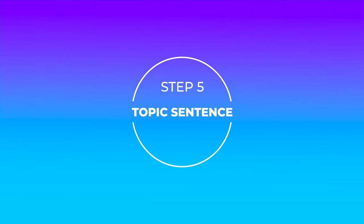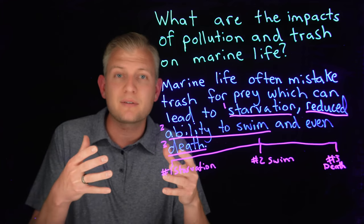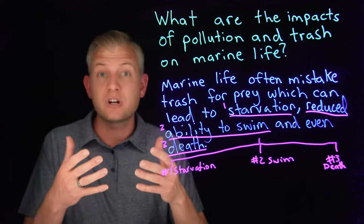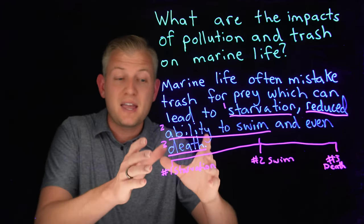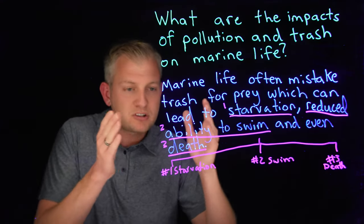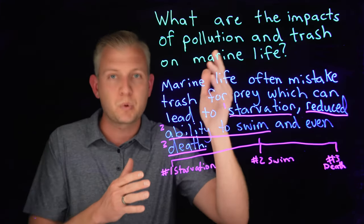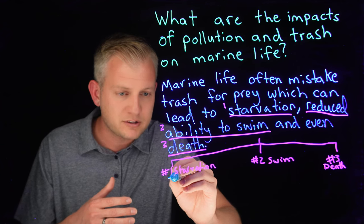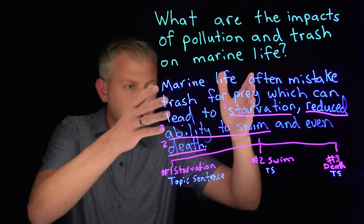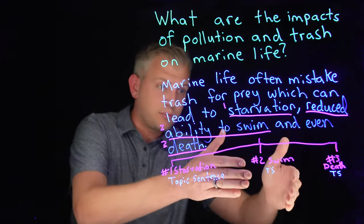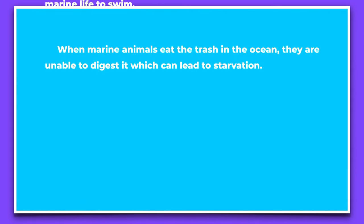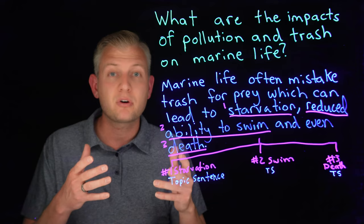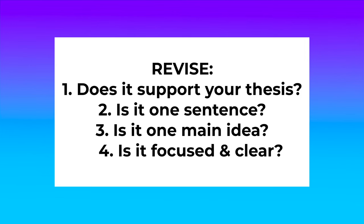Step five: write your topic sentences. I'm going to write my topic sentences — that's the one introductory sentence to each body paragraph that introduces the main topic for that paragraph. For example, for paragraph one about starvation: "One of the impacts of trash and pollution on marine life is it leads them to starvation." I'm only going to talk about starvation in that paragraph, not reduced ability to swim or death. Take a look at these topic sentences — they introduce the main topic of each paragraph. Like my thesis, I use my question to write my topic sentences, and they keep things organized. Ask a peer or teacher to read your topic sentences and make sure they do their job.